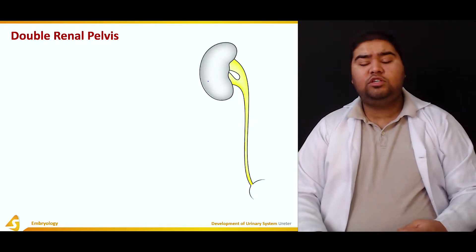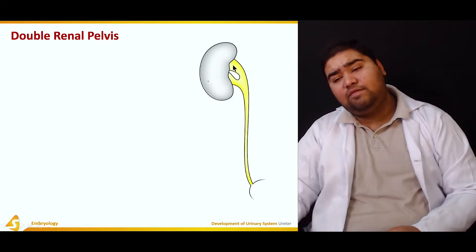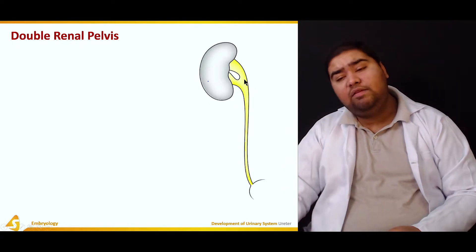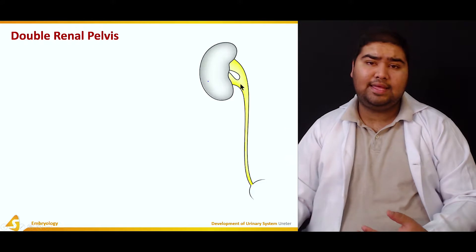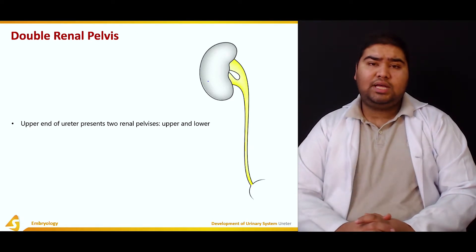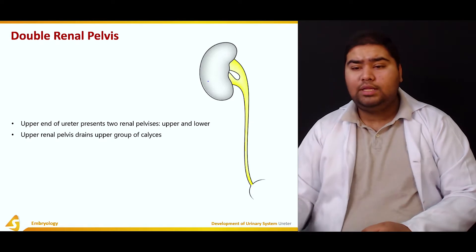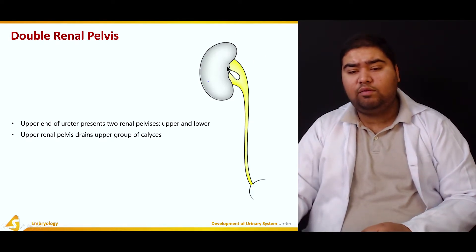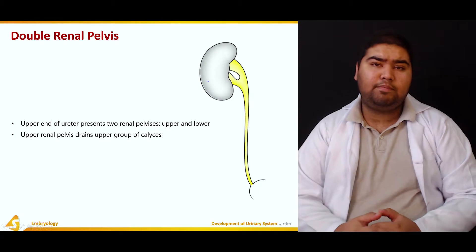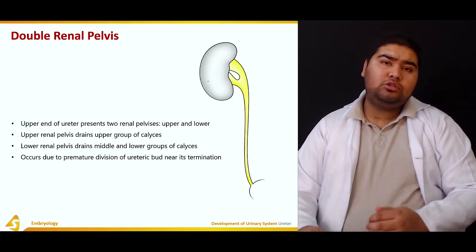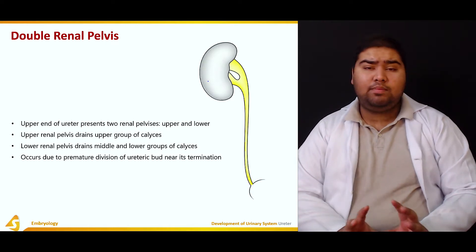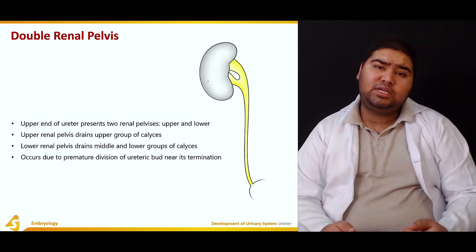A double renal pelvis: as seen in the figure, the upper funnel-shaped portion of the ureter is the renal pelvis. However, here there is an upper pelvis and a lower pelvis — two renal pelvises. The upper renal pelvis drains the upper group of calyces, while the lower renal pelvis drains the middle and lower groups. This occurs due to premature division of the ureteric bud near its termination.